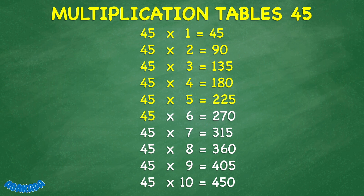45 times 6 equals 270. 45 times 7 equals 315. 45 times 8 equals 360. 45 times 9 equals 405. 45 times 10 equals 450.